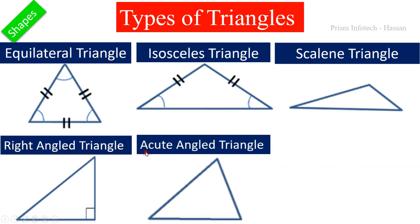Next one is an acute-angled triangle. In this triangle, all angles are acute, so this triangle is called an acute-angled triangle.